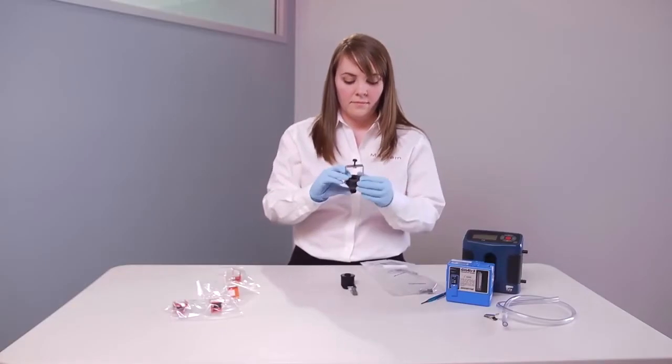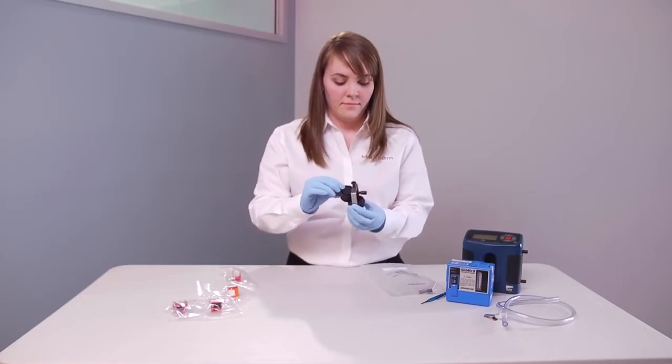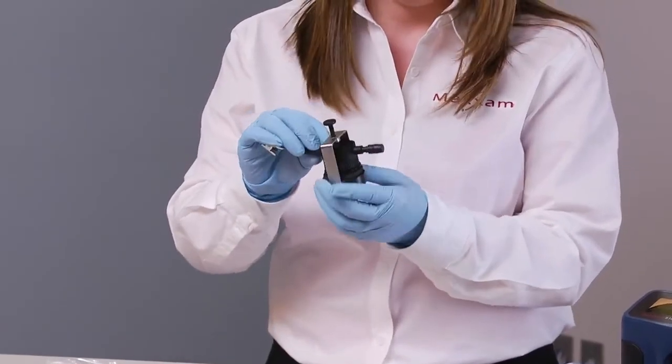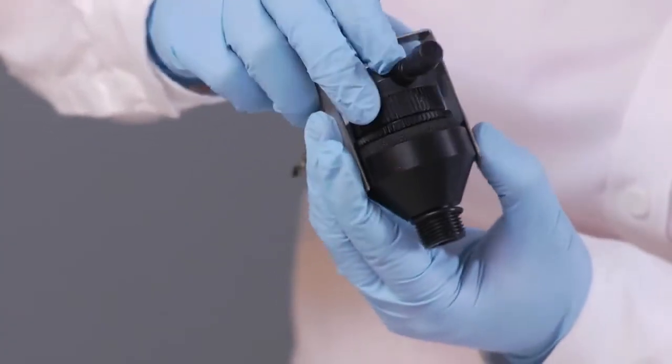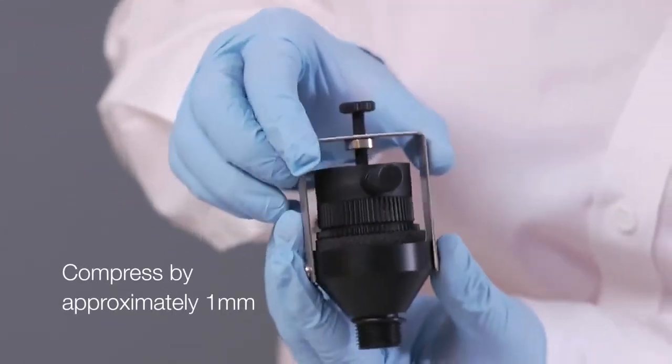Insert the IOM sampler through the hinged bracket of the adapter with the inlet of the sampler against the adapter's foam ring. Clamp the IOM sampler in place with the clamping screws until foam ring compresses by approximately one millimeter.